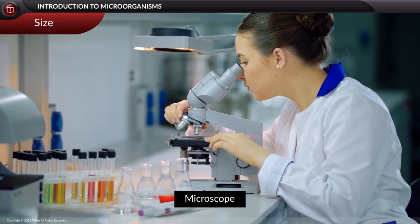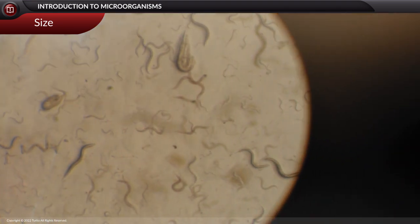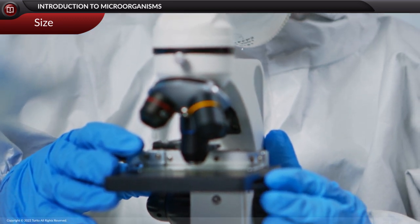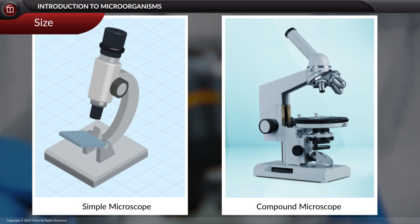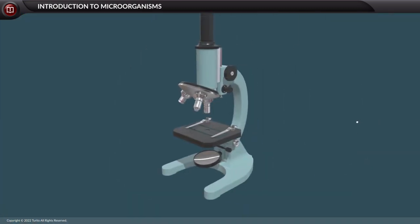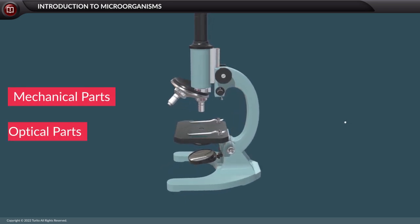A microscope magnifies the original image of the tiniest particles to form an enlarged image. Microscopes can be of two types: simple microscope or compound microscope. One type of device which magnifies small organisms or objects is the hand lens. A compound microscope is made up of mechanical parts and optical parts.